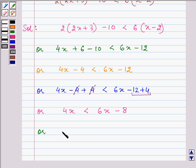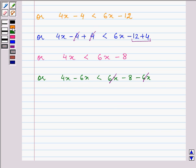Now on subtracting 6x from both the sides we have to simplify it further. And hence minus 2x is less than minus 8.